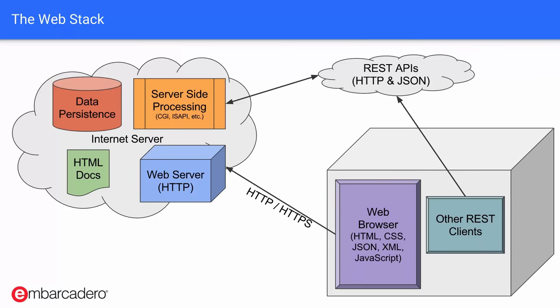Let's talk a little bit about the web stack and where the different pieces go. There is the internet server, which has a database, some sort of data persistence, HTML documents, images, and other types of documents. Then there's the server-side processing — the CGIs and the SAPIs. When you're using WebBroker, you're building a CGI or a SAPI that resides in the web server to do processing, maybe connect to a database and combine data with an HTML document, and then serve it up via HTTP or HTTPS. The web browser on the client side only understands HTML, cascading style sheets, and JavaScript — and to some extent JSON and XML as well.